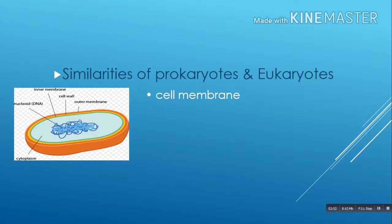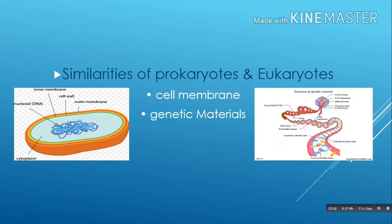Due to this, it is necessary for the selective import and export of compounds. The second similarity is genetic material. Eukaryotic and prokaryotic cells both have DNA as the basis for their genes. This genetic material is needed to regulate cell function and encodes the information which is passed on to progeny. Ribosomes: both eukaryotic and prokaryotic cells have ribosomes to produce protein for the cells.